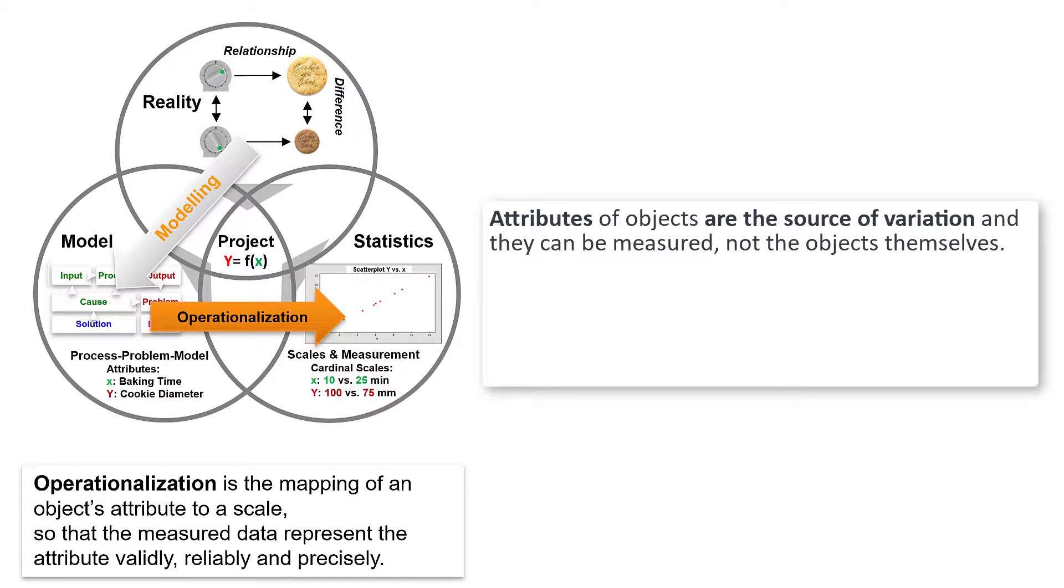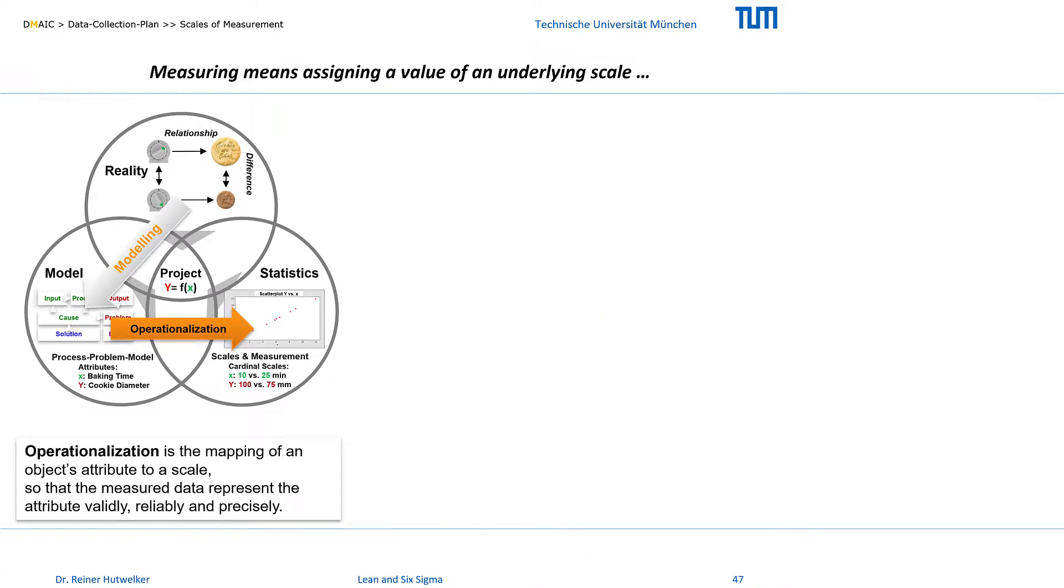You remember that we can only measure attributes of objects because they are the source of variation. This is true for cookies as well as for the loudness of my voice, and it is also true for influences like my distance to the microphone. Objects can have qualitative and quantitative attributes, and the actual status of these attributes changes from case to case. Measuring now means assigning a qualitative or quantitative value of an underlying scale to the respective state of the attribute of an object.